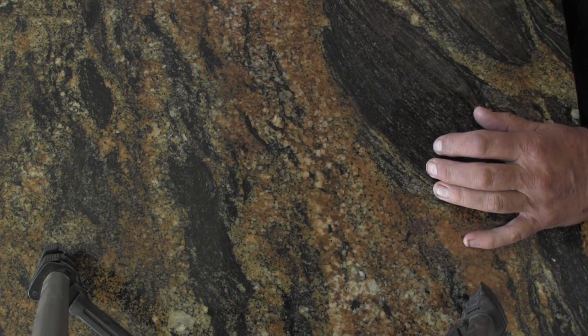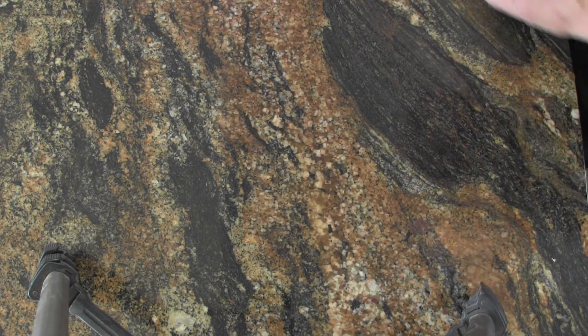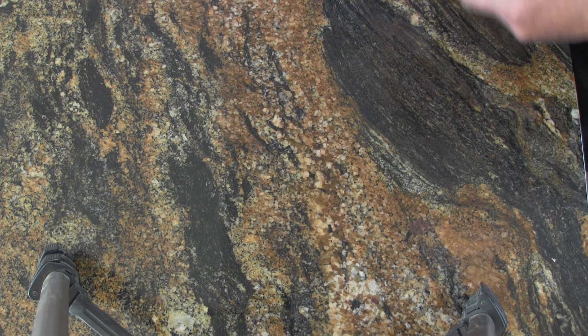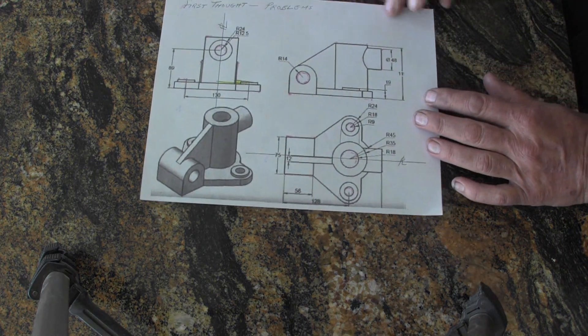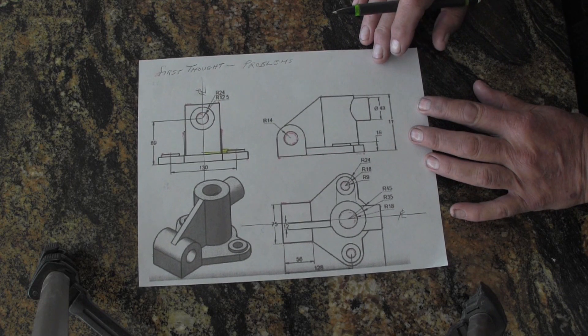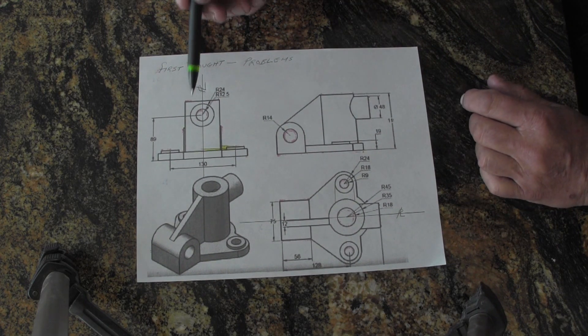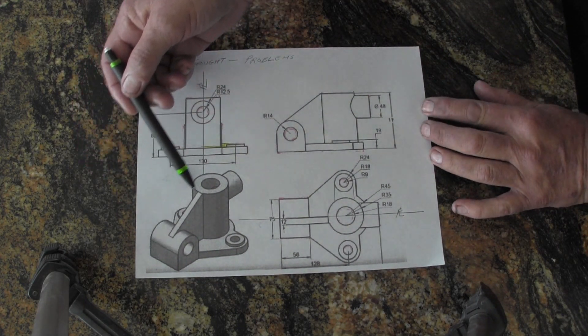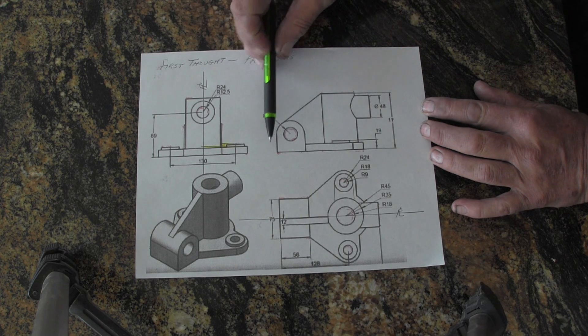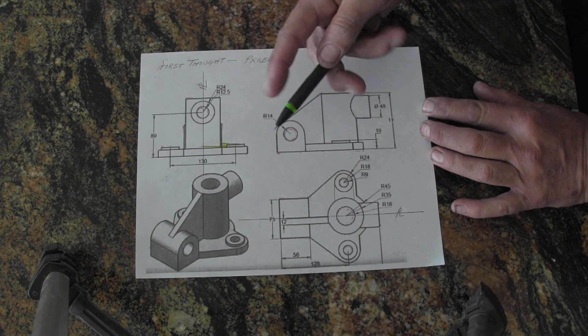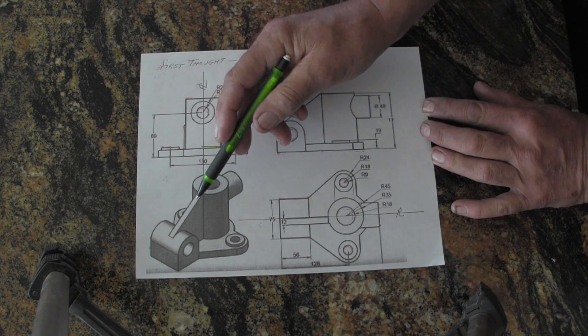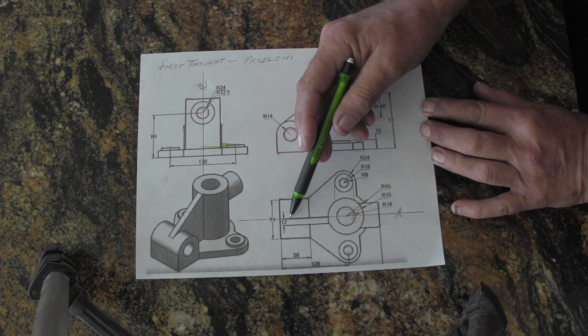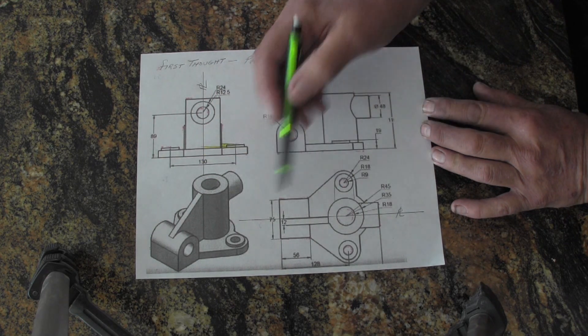Next thing you've got to do is decide how you're going to mold it. First thought would be right here, right about there, put a parting line right here, split it right down through the center of this. So you'd have a cross section like that because this rib here is on the parting line. So your parting line would go through like that.